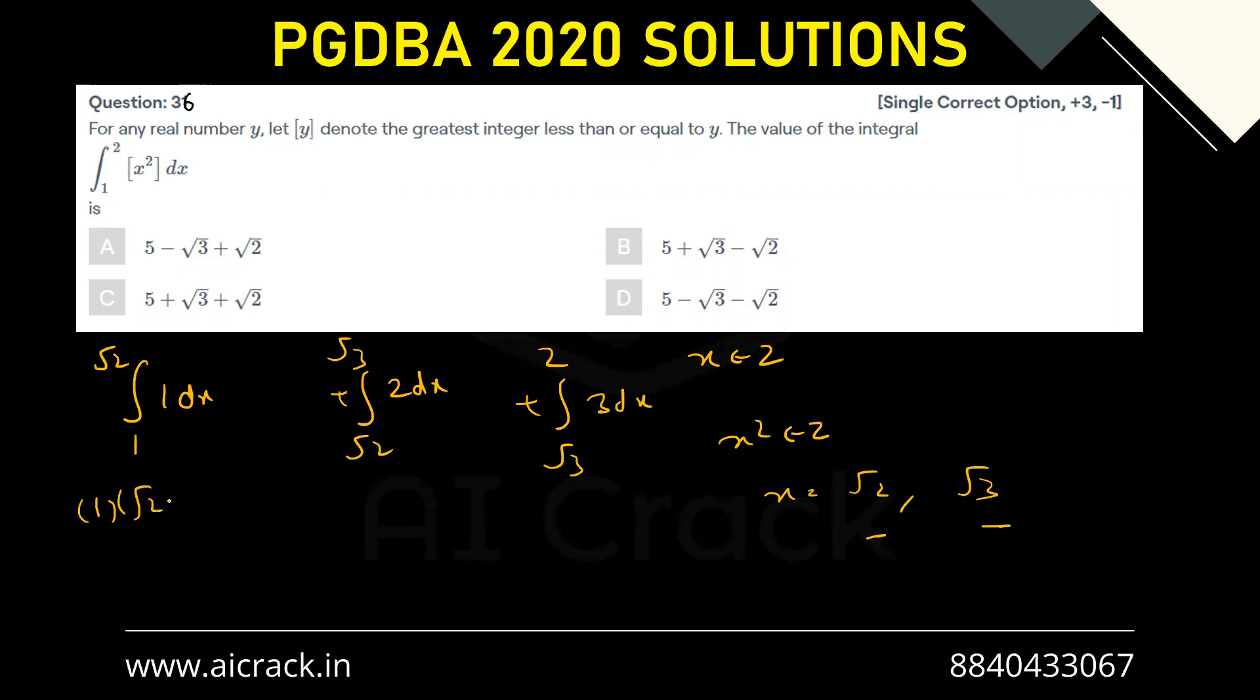We'll be getting 1 times (√2 - 1) plus 2 times (√3 - √2) plus 3 times (2 - √3). Now this becomes √2 and -2√2, so basically -√2.